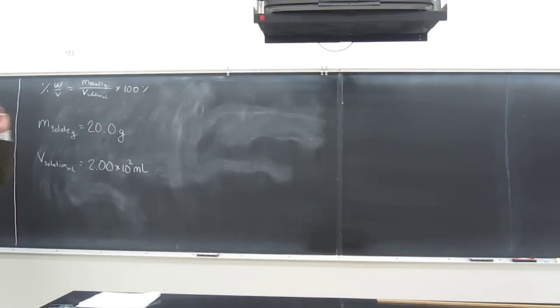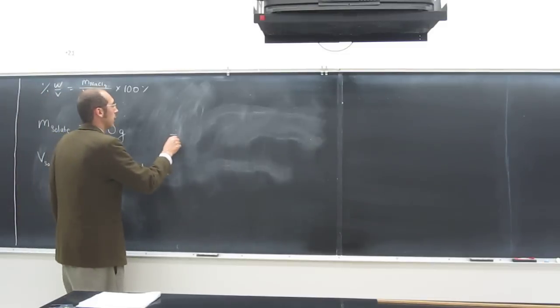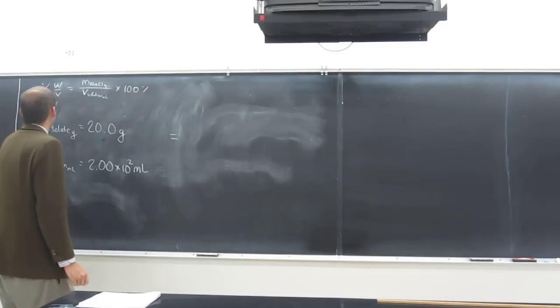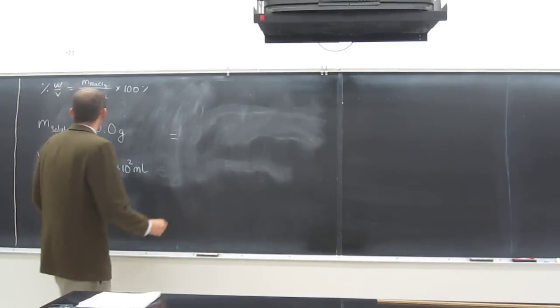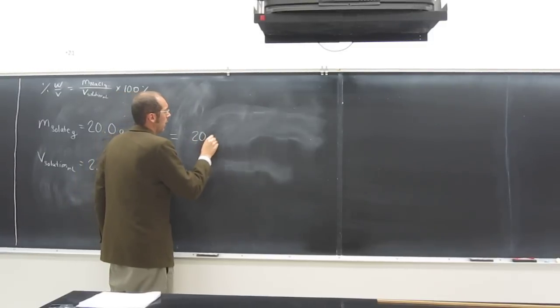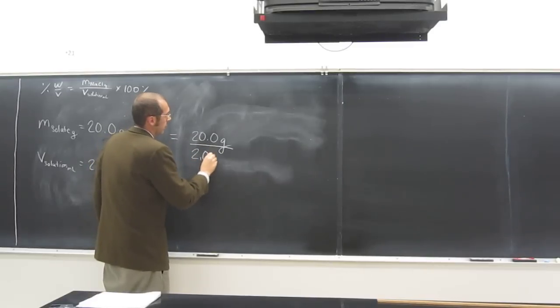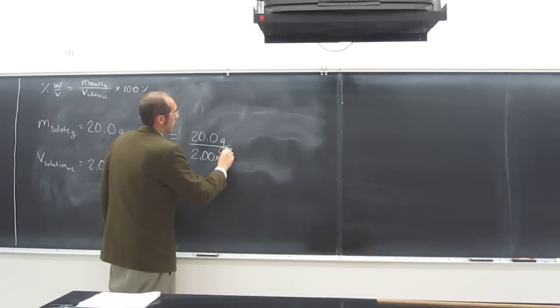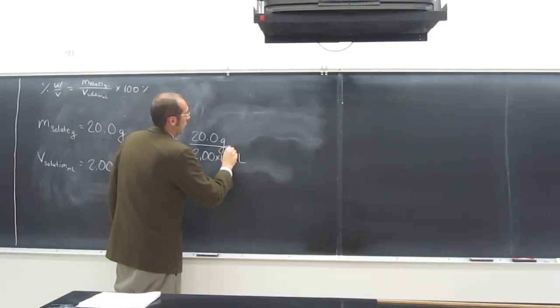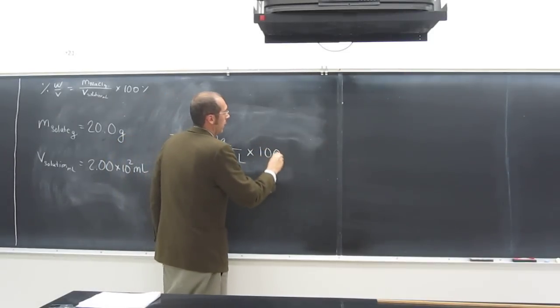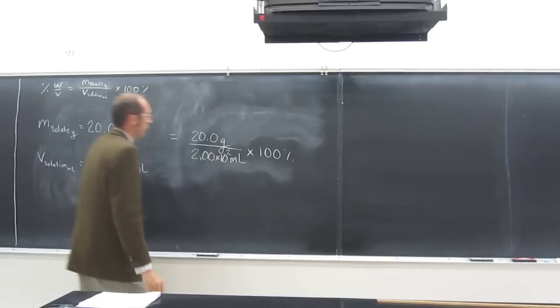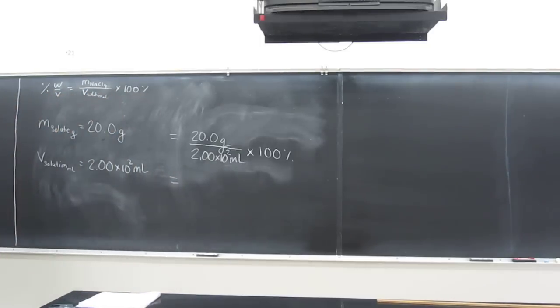So all we need to do is plug those numbers in and we should be able to get this answer. So, 20.0 grams divided by 2.00 times 10 squared milliliters, times 100 percent. What did you guys do? What is it? 10.0 percent.